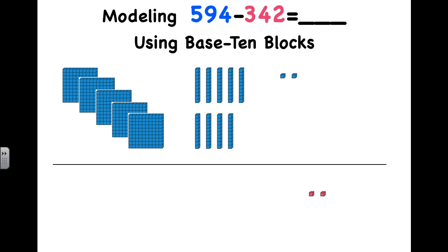342 says we take away four tens. So, one, two, three, four.